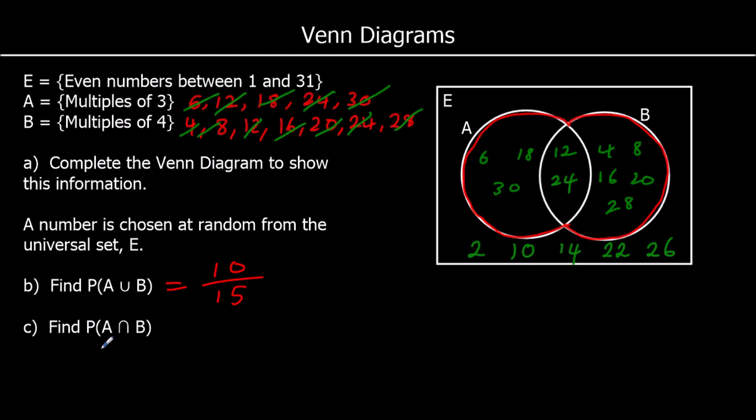Find the probability it's in the intersection of A and B. So it's in the A circle and the B circle. That's the overlap. The numbers in both circles. And there are two numbers in both circles out of 15 in total. So 2 fifteenths.